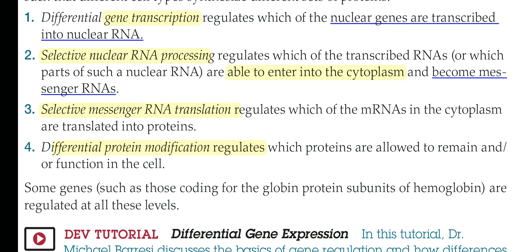The third level is translation — among the functional mRNAs transported to the cytoplasm, there is selection of which ones undergo translation. The fourth is differential protein modification: the proteins formed are not yet functional. They must also be selected and processed. For example, signal sequences need to be cleaved to become functional. Using heat shock proteins, changes in protein conformation are needed so that the protein can function better and become fully functional.